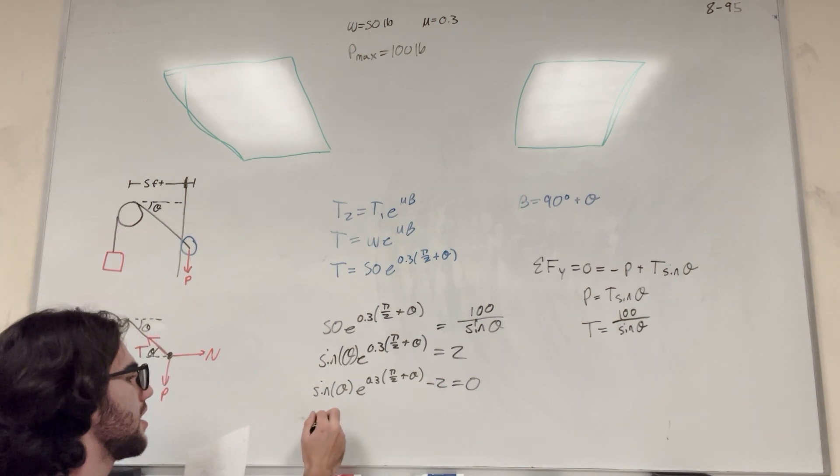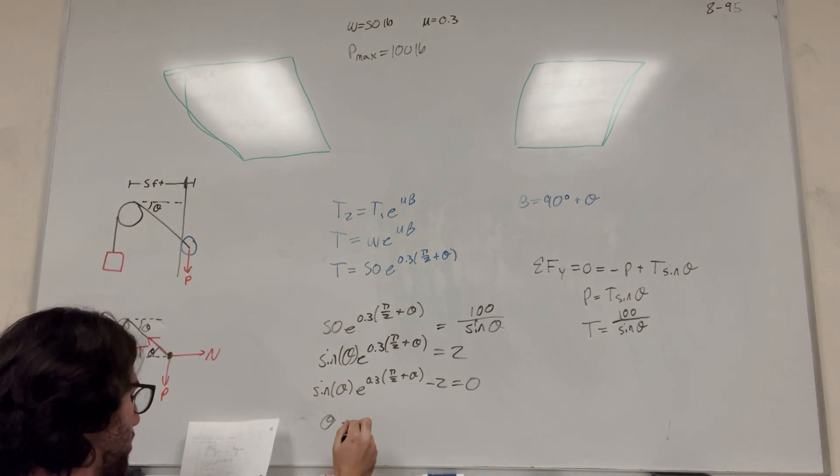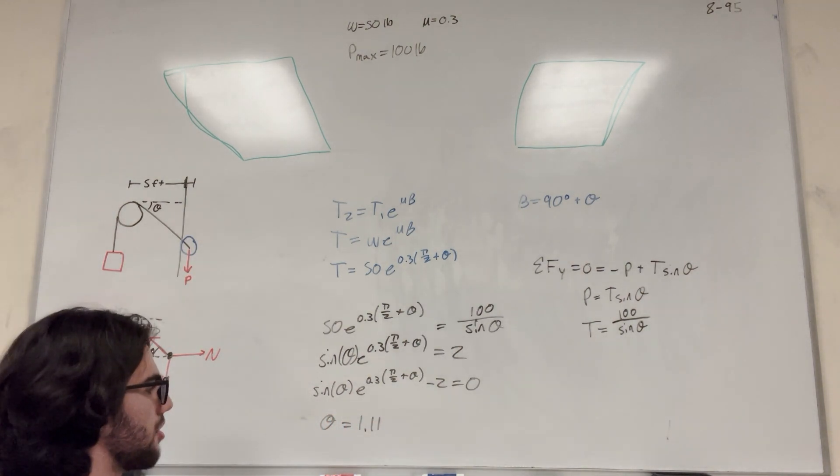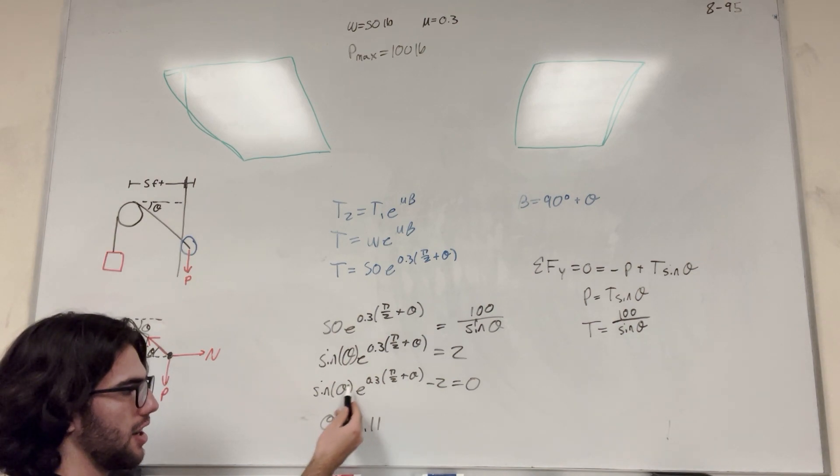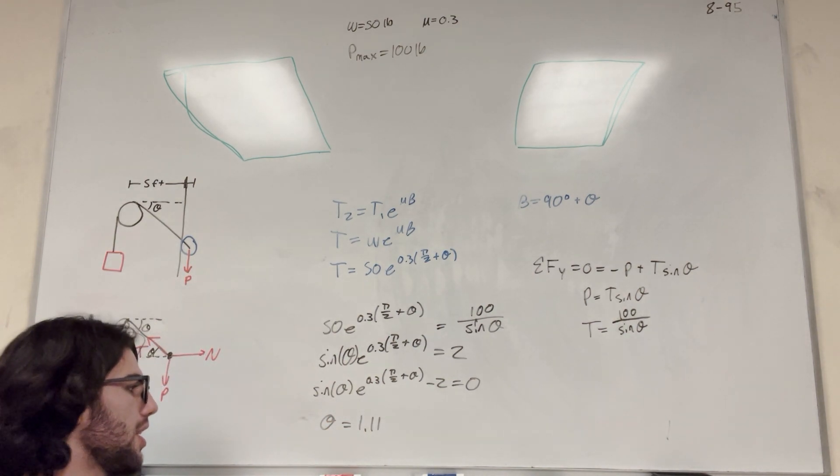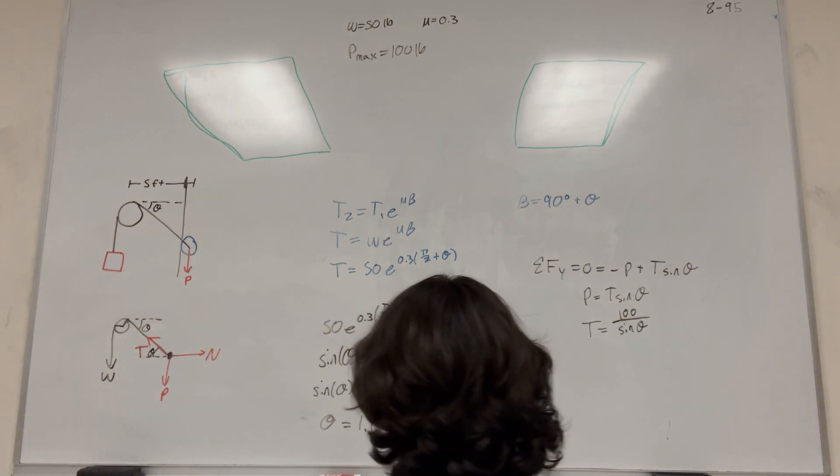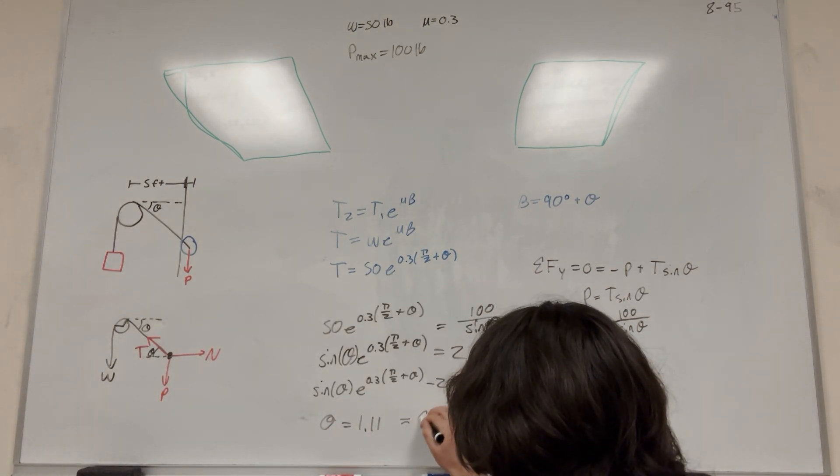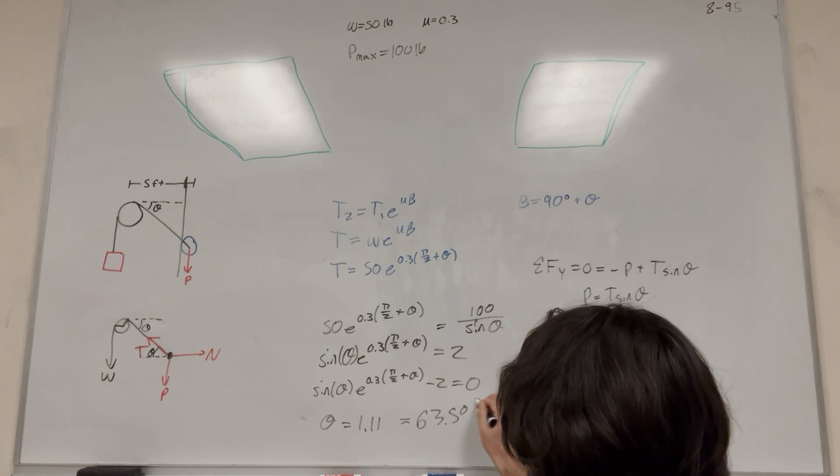So your first theta, where it's true, is equal to 1.11. So this is in radians because we're in radians here and radians here. And make sure your calculator is in radians too. So then if you take this radians and you convert it to degrees, you're going to get 63.5 degrees, which is your answer.